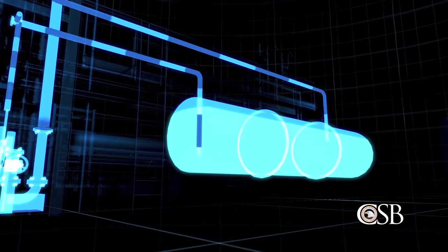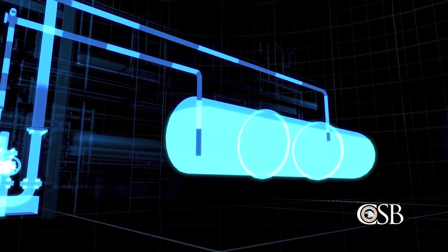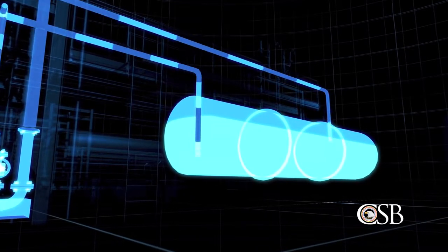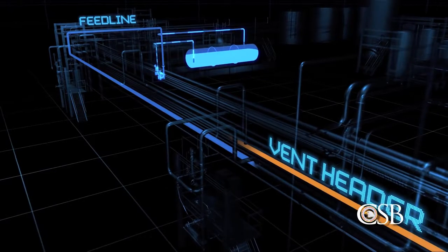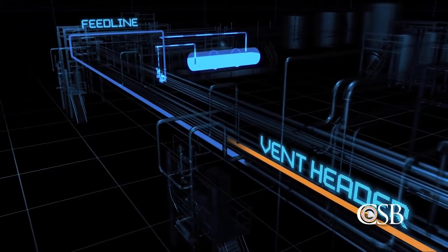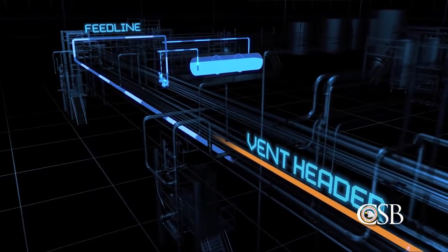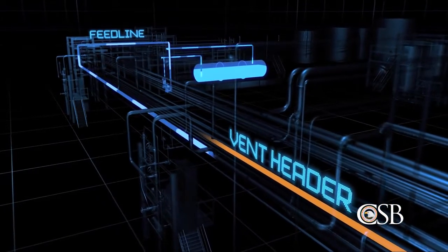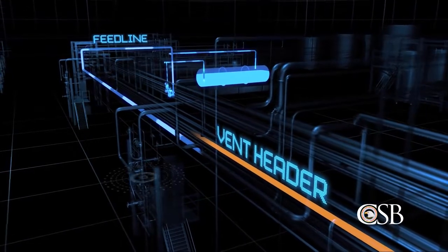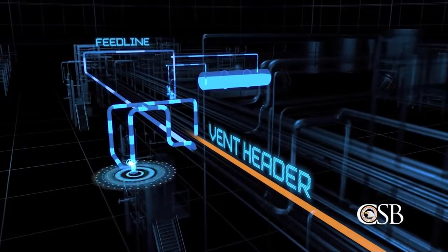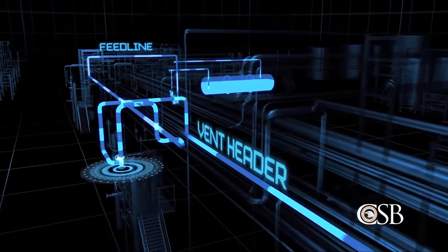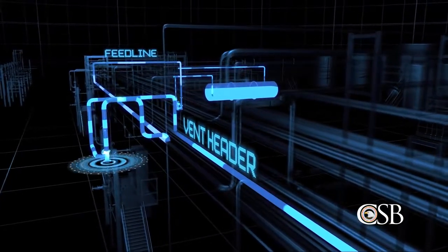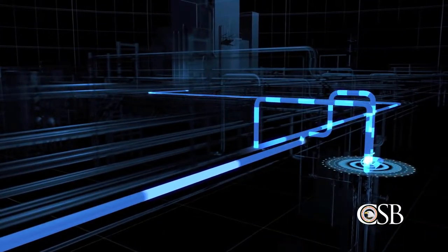Unknown to the operators, at approximately 2:45 am, the level in the methyl mercaptan storage tank began to drop. The CSB concluded that at that time, the hot water removed the remaining hydrate and liquid methyl mercaptan began to flow through the feed line. The methyl mercaptan fed to the system by the pump followed the path of least resistance through the open second valve into the vent header. The vent system quickly filled with liquid methyl mercaptan, where DuPont never expected it to be.